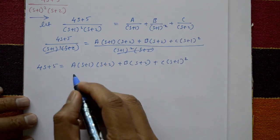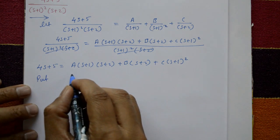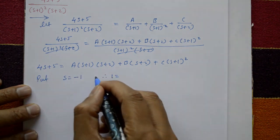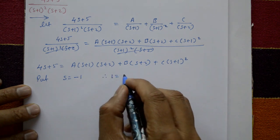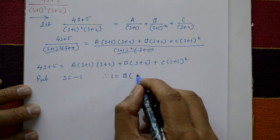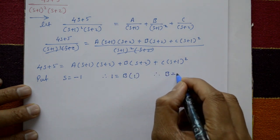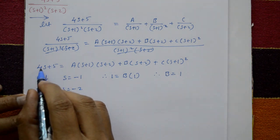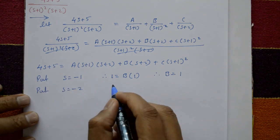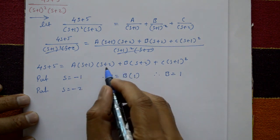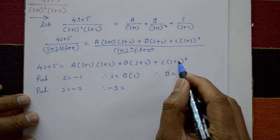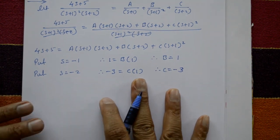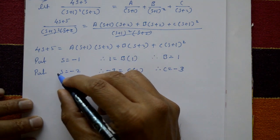After finding A, B, C, use the inverse formula. Substituting s = -2: -8 + 5 = -3, therefore -3 equals c into (-2 + 1) whole square, which is c into 1, so c equals -3. Now substituting to find B: putting s = -1 gives -4 + 5 = 1, and B into (-1 + 2) equals B into 1, so B equals 1.